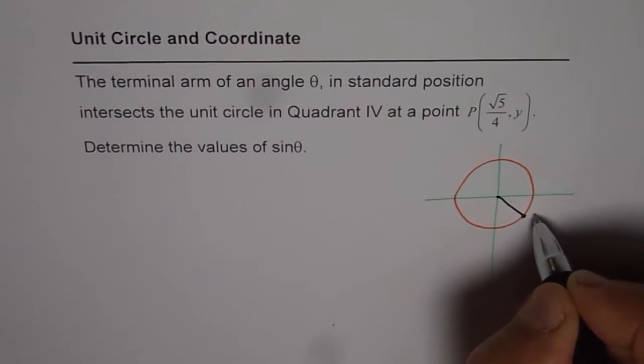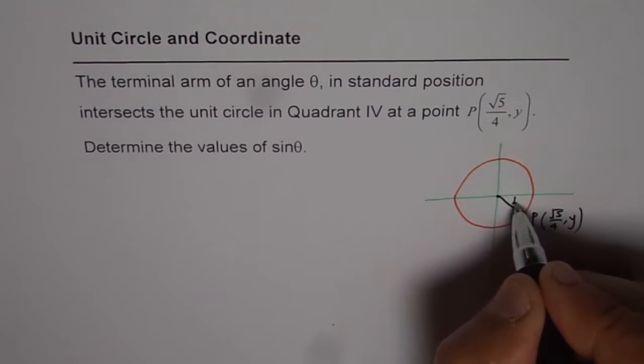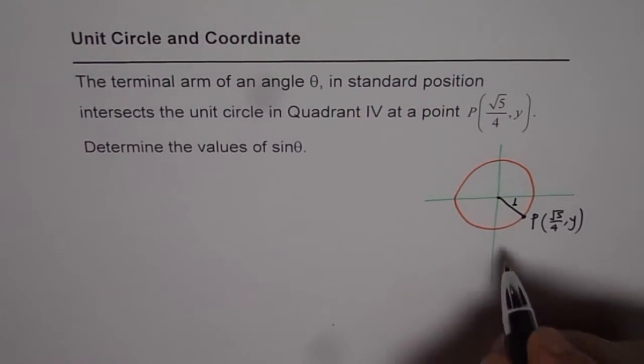Let's say that's the point P. And point P is given to us as square root 5 over 4 comma y. And radius is 1 since it is a unit circle.